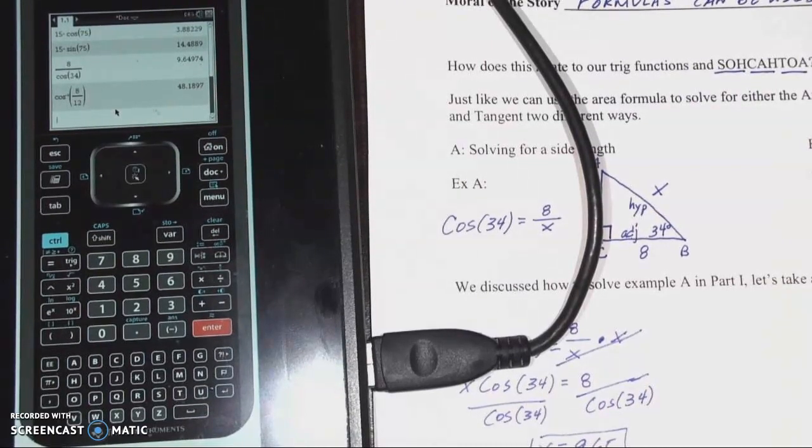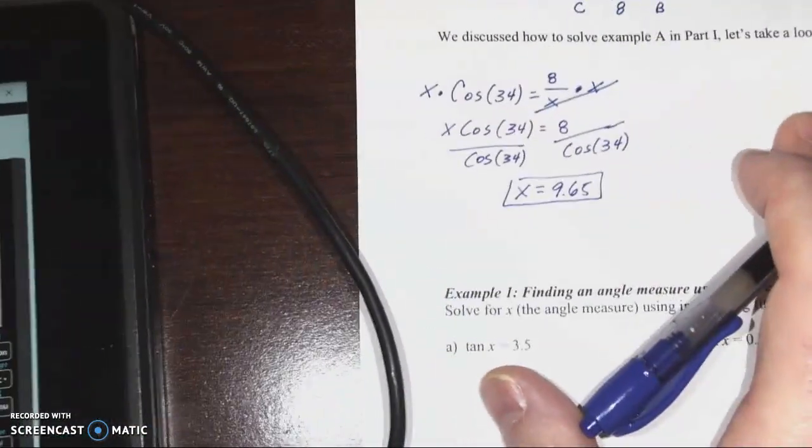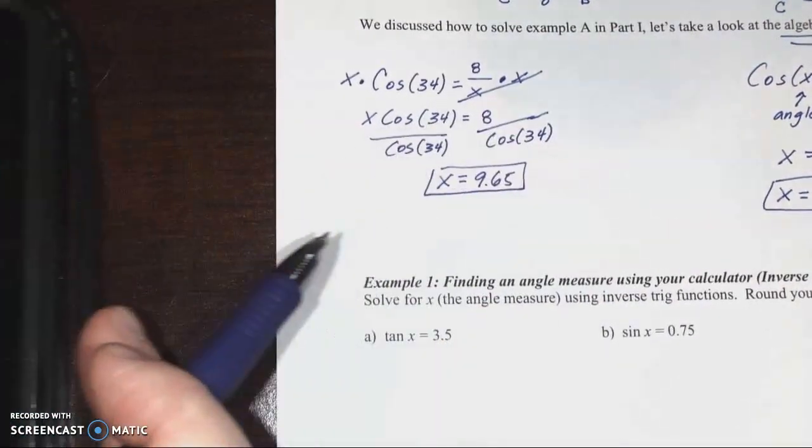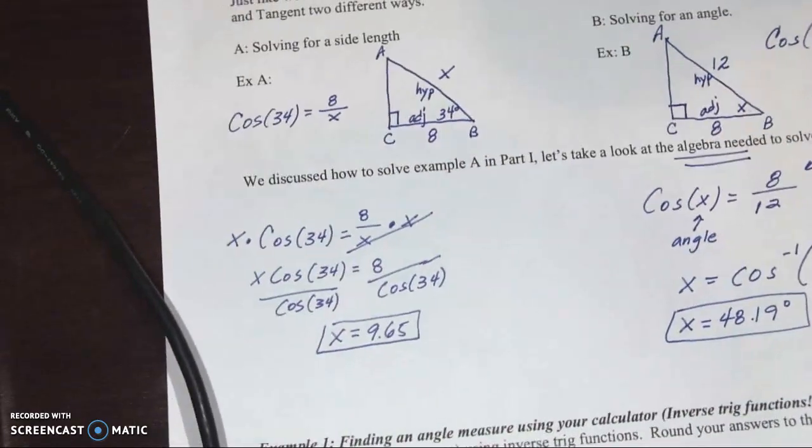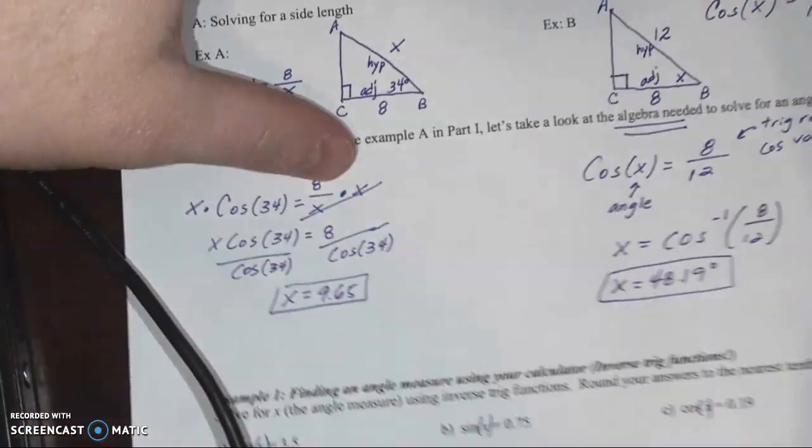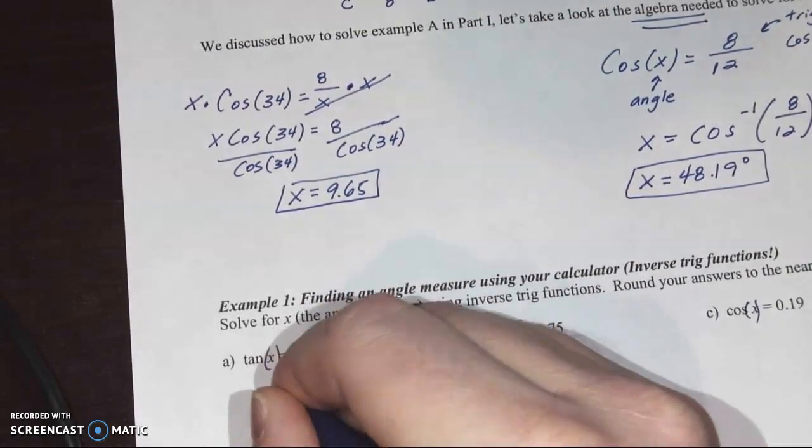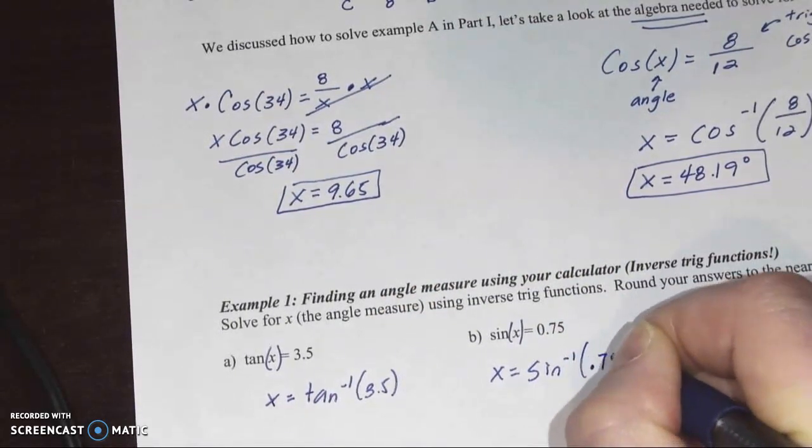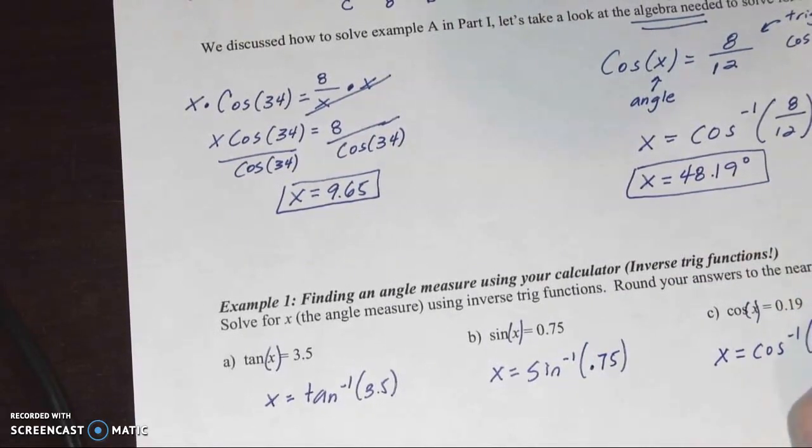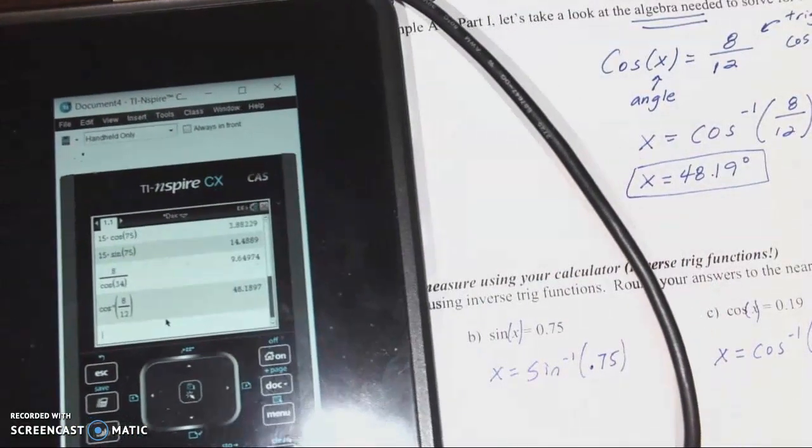Example 1 here. These are just, again, kind of just like we did in Part 2, just working with the calculator. How do we know this is us practicing to solve for the angle measure? Well, check out where the variable is. In each one of these three, the variable is going to be attached to our trig function. So we have tangent of x equals 3.5, sine of x. All we're going to do is do the inverse of those trig functions. So we'll do inverse tangent of 3.5. We'll do inverse sine of 0.75. We'll do inverse cosine of 0.19. Very simple. We'll do a couple of these with the calculator.